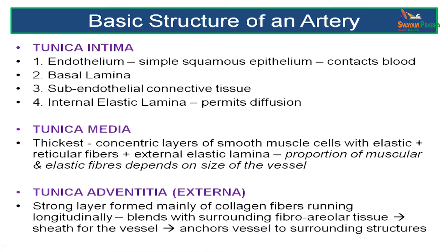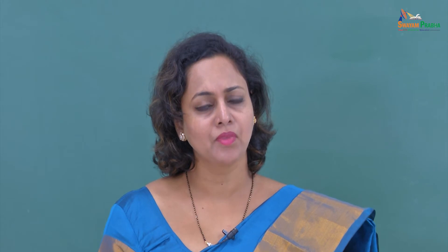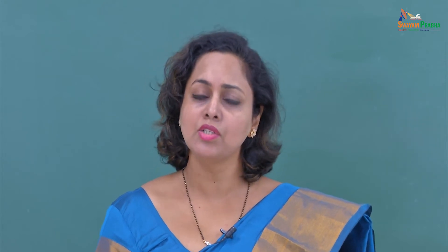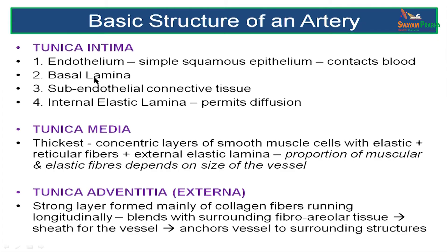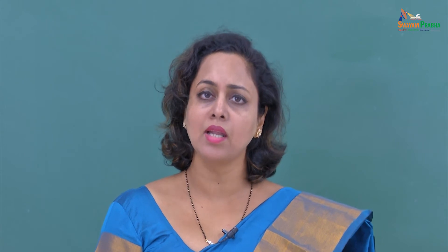Arteries have a tunica intima, a tunica media and a tunica adventitia. Remember that arteries have a very thick tunica media compared to veins, which have a thicker tunica adventitia. The tunica intima is made up of an endothelium, a basal lamina, a subendothelial connective tissue and an internal elastic lamina. The media is the thickest layer of concentrically arranged smooth muscle cells as well as elastic and reticular fibres. The tunica adventitia is made up of collagen fibres that run along the axis of the blood vessel.